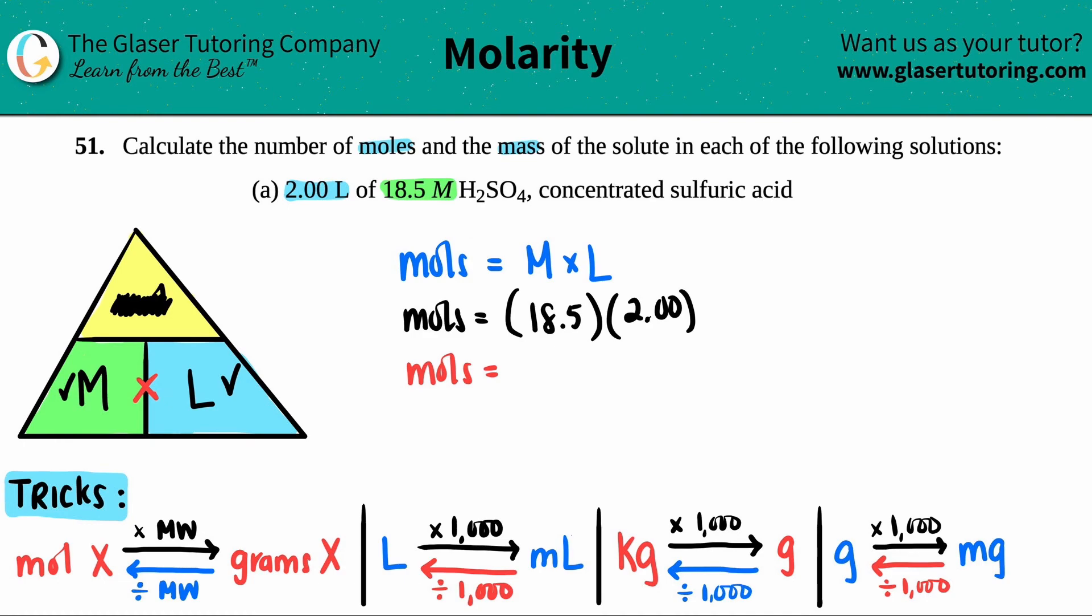If we were doing sig figs, there's three sig figs, the least here, so it would be 37.0 moles of the solute, H2SO4. Okay, so that's the first part. The first part is done. We answered the question, how many moles? 37.